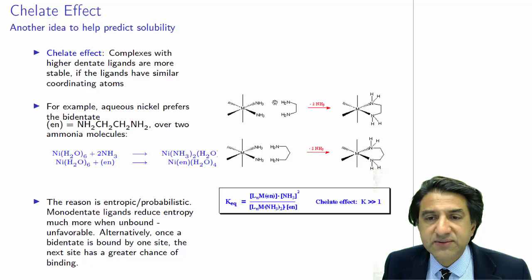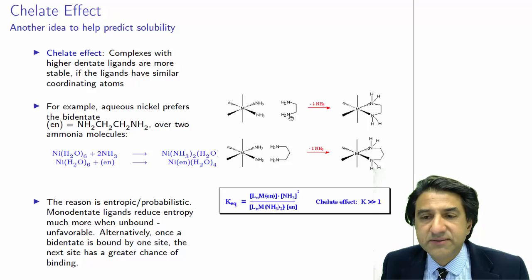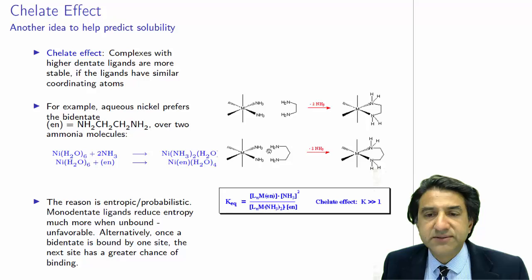Because once this is joined on, once that one joins onto this ammonia and kicks that off, this is whizzing around like a kind of arm, and eventually that arm has a greater probability of kicking onto that.